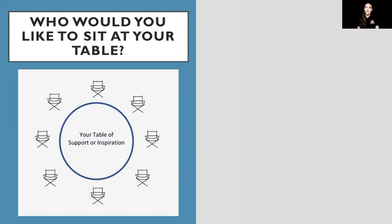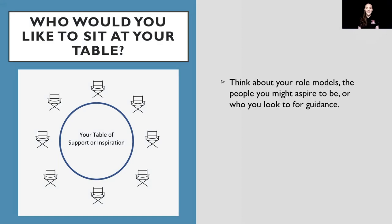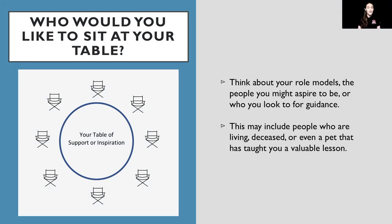The first activity is discussing who you would like sitting at your table — and I'm not talking about the dinner table, I'm talking about your table of inspiration. While thinking about this, reflect on your role models or the people you aspire to be or look to for guidance. This can include anyone living, someone who has passed away, or even a pet — anyone or anything that has had a great influence in your life or has taught you a valuable lesson.